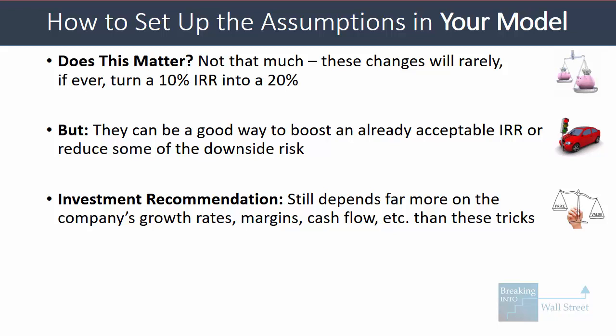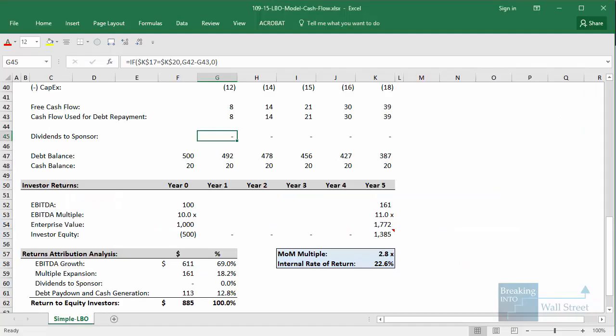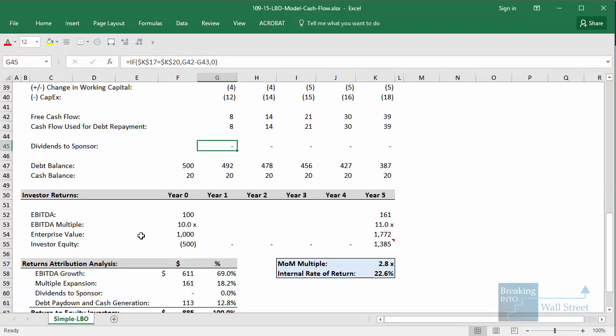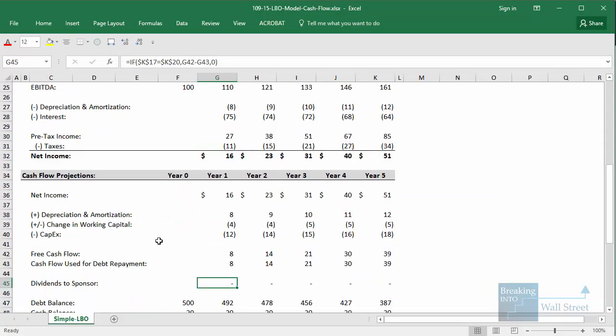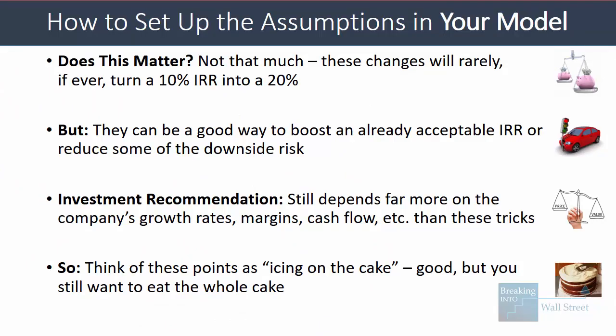Ultimately, an investment recommendation depends far more on the company's growth rates, margins, and cash flows than on these tricks for how you use the company's cash flow. Think of all this as icing on the cake — it's good to know, but you still want to get the whole LBO model right: the exit, the returns attribution, the debt repayment and cash generation. Once you have all that set up correctly, then you might want to start building in these types of options.